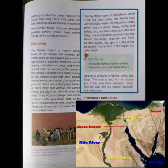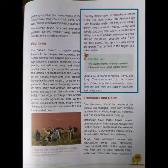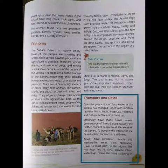The oasis regions, called 'phila', grow fruits like dates, plums, figs, apricot and olives. Mineral oil is found in Algeria, Libya and Egypt, and this region is also rich in natural gas. Other important minerals found here are coal, iron ore, copper, uranium and manganese.